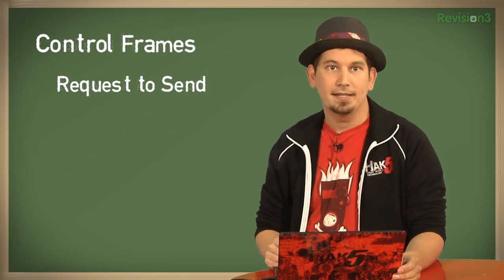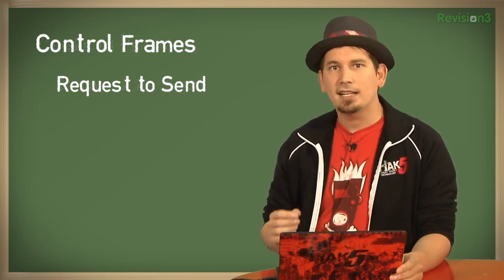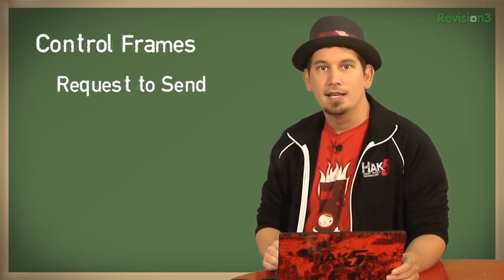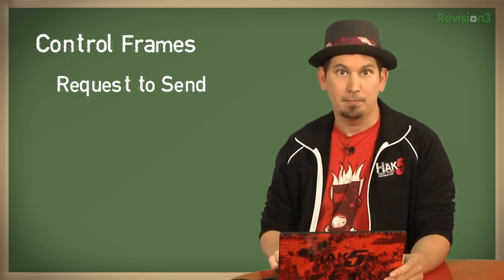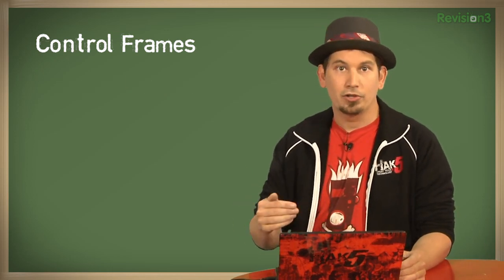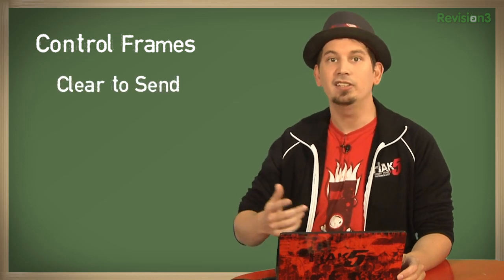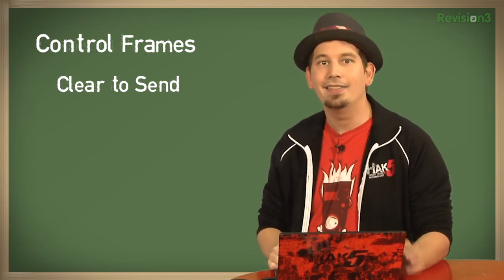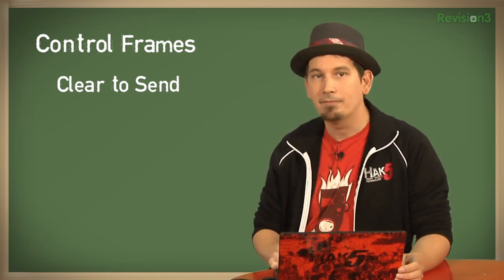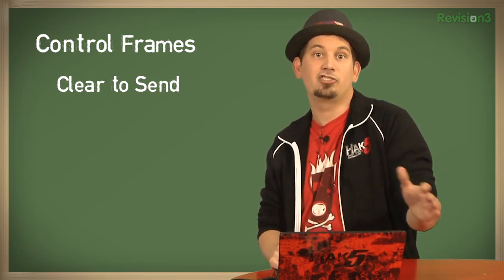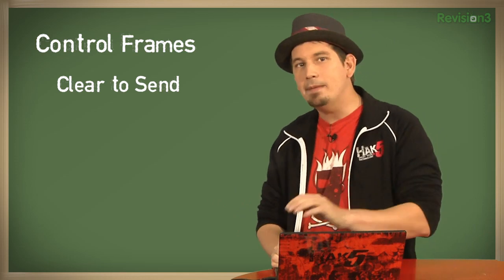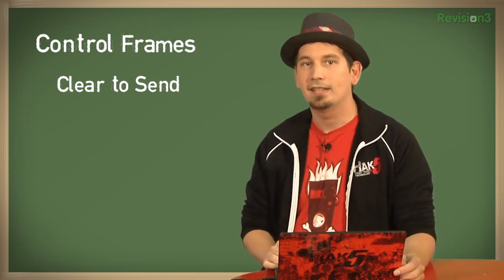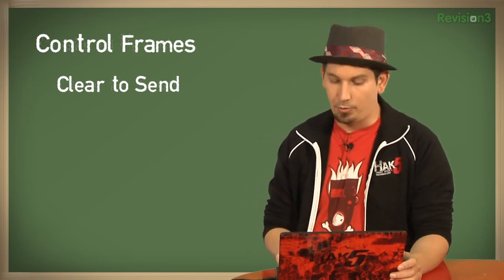A request to send, or RTS frame, is a short frame that one station sends to another asking if it can send some data frames. It's the first part of a two-way handshake that makes up the beginning of any data transmission. The second part is the clear to send, or CTS frame. If the station isn't busy, it'll issue a CTS in response to an RTS, and it'll specify an amount of time for which the two stations can communicate. Other nearby stations observe this and wait patiently, which minimizes interruptions that would otherwise cause interference and result in packet retransmissions and overall network performance degradation.